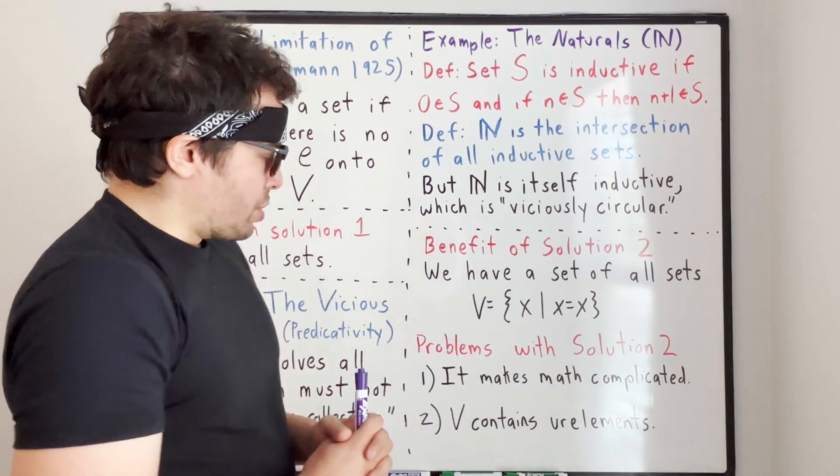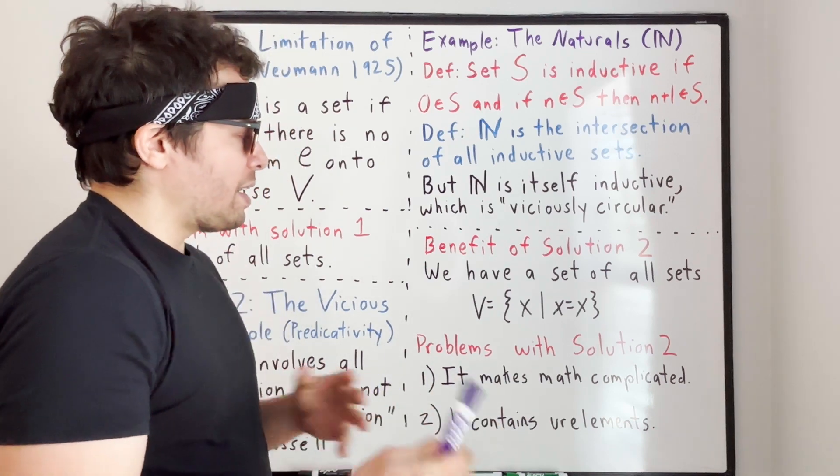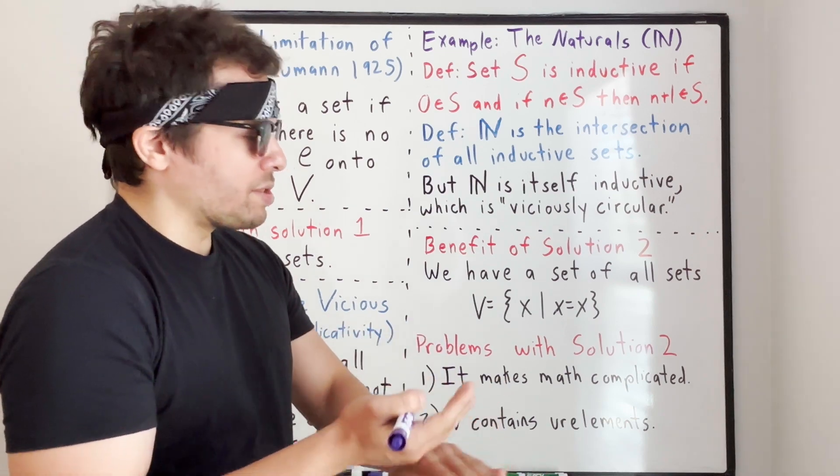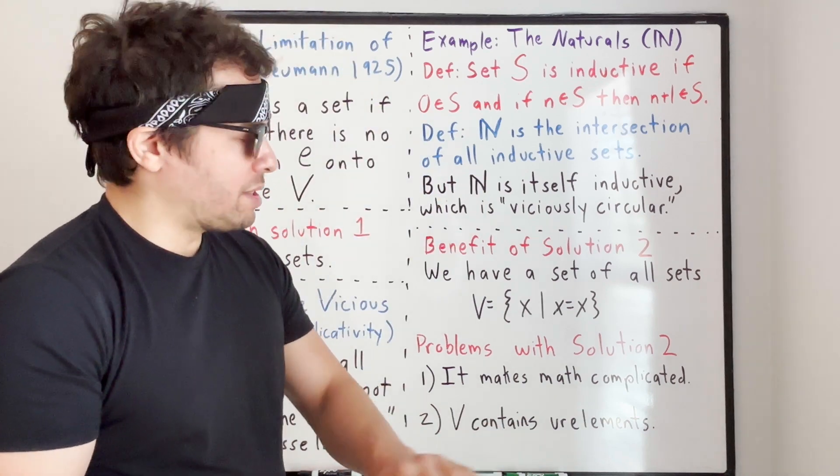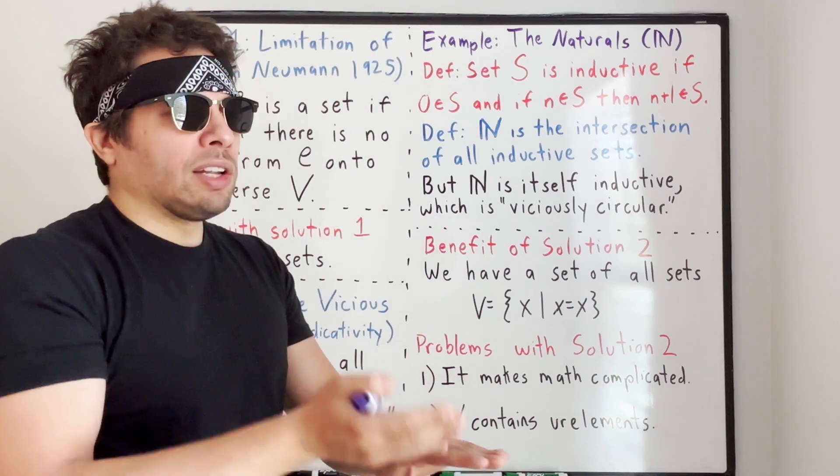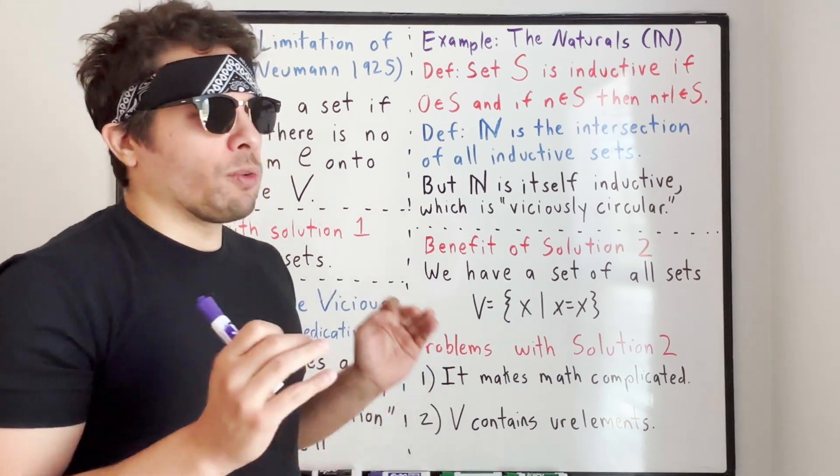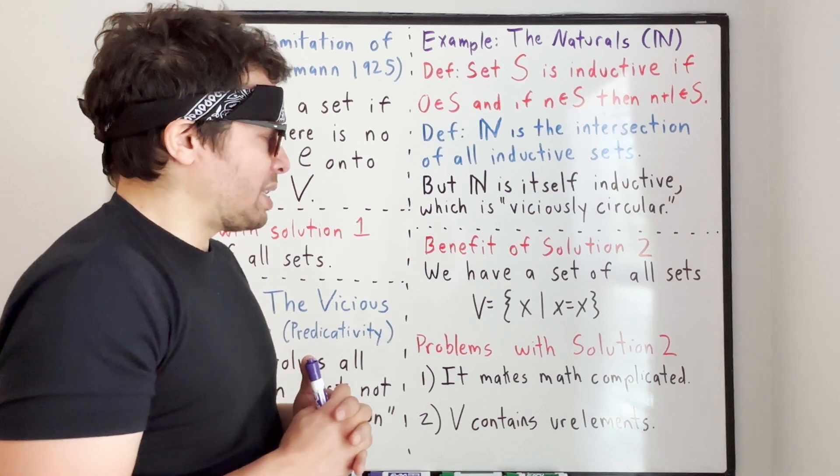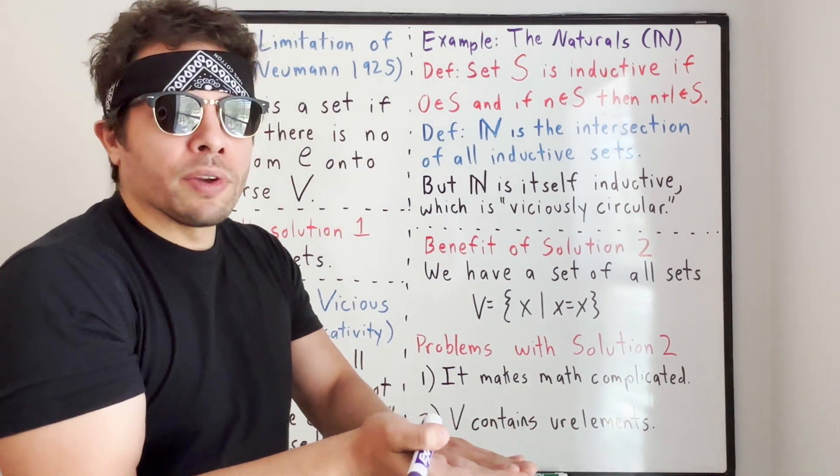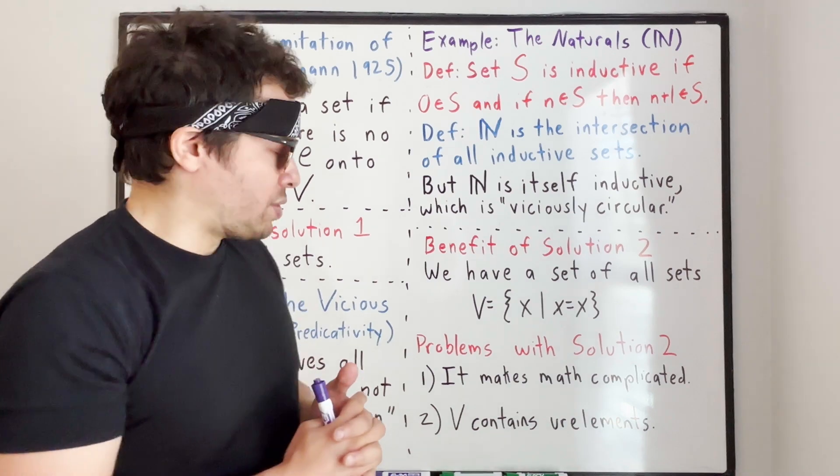One of the problems with Solution 2 is that it makes math extremely complicated. I really didn't get into the details, but what happens is there's different levels of objects. You have objects at the lower level, you have objects at a higher level, and it's very hard to reconcile the higher level objects with the lower level objects. Things get very complicated. In fact, that was the reason why Russell introduced his axiom of reducibility, which basically said for every higher level object, you could just magically assume there was some lower level way to define it. That led to problems.